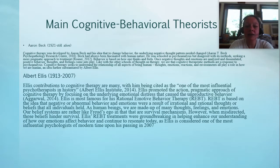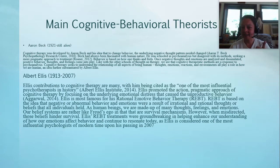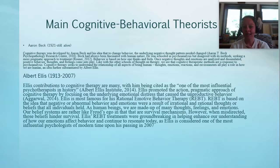Our main theorists are Beck and Ellis. They came up with the ABC model of cognitive therapy. Basically, you have an event that happens and it triggers a thought, which in turn triggers a certain type of behavior. For example, you get fired from your job — that's an event that triggers negativity. You start having feelings of worthlessness and hopelessness, and that leads to depression and depression-type behaviors.